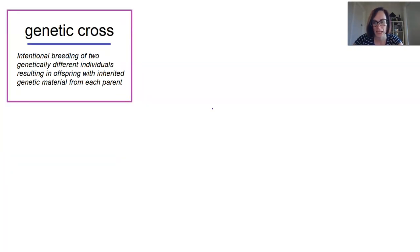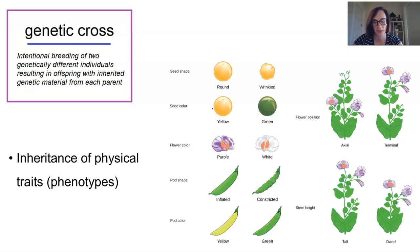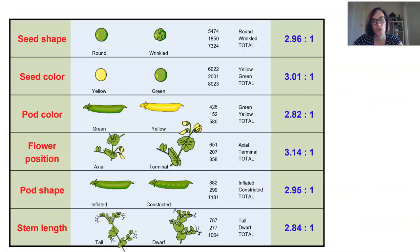Mendel crossbred pea plants to model and deduce the basic principles of how physical traits are inherited. So he studied seven different traits of the pea plant: the seed shape, the seed colour, the flower colour, the pod shape, the pod colour, the flower position, and the stem height. Now he observed that the purple flower appeared more often than the white flower, that the green seed pod was more abundant than the yellow pod, that round seeds appeared more often than the wrinkled seeds, as well as so many other things.